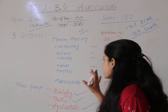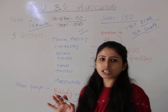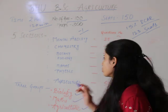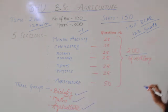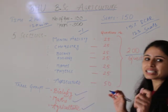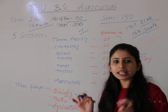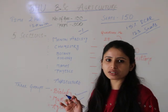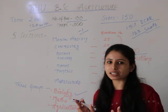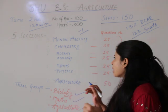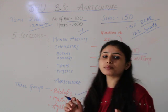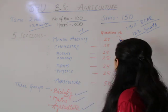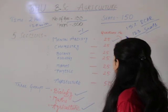You will have 5 questions come from each section. The total number of questions is 200, but you only have to attempt 100 questions. Those questions cover Biology, Mental Ability, and Chemistry.